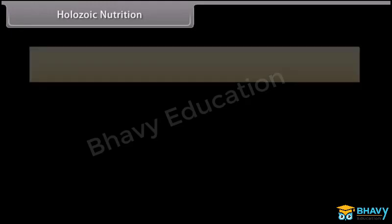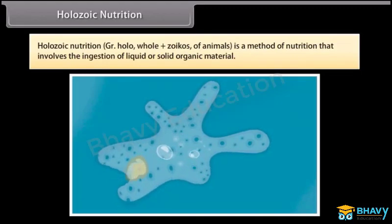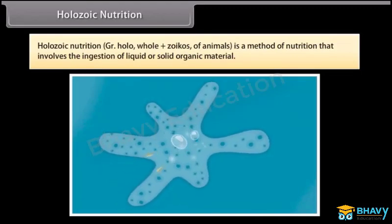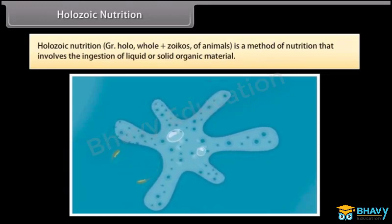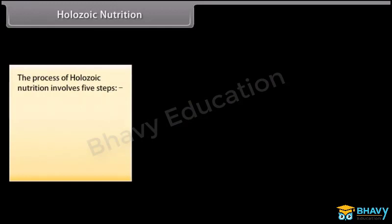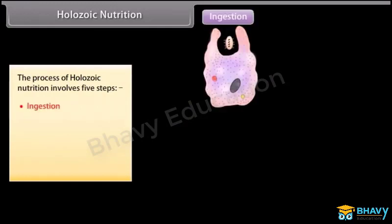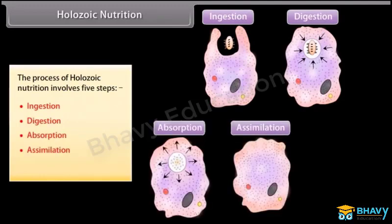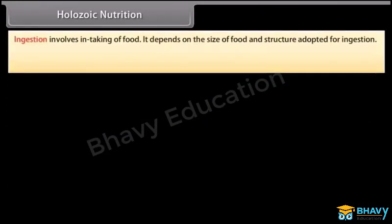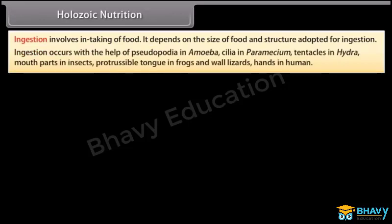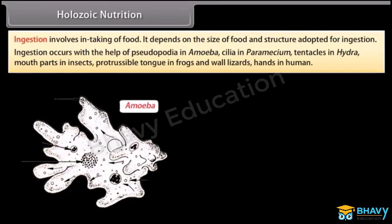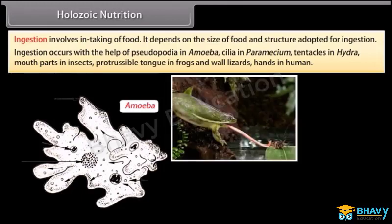Holozoic Nutrition. 'Holo' means whole and 'zoicos' means animals. It is a method of nutrition that involves the ingestion of liquid or solid organic material. The process of Holozoic Nutrition involves five steps: Ingestion, Digestion, Absorption, Assimilation, and Egestion. Ingestion involves the intaking of food and depends on the size of food and structure adopted for ingestion. It occurs with the help of pseudopodia in amoeba, cilia in paramecium, tentacles in hydra, mouthparts in insects, protrusible tongue in frogs and wall lizards, and hands in humans.